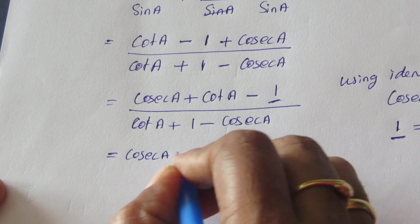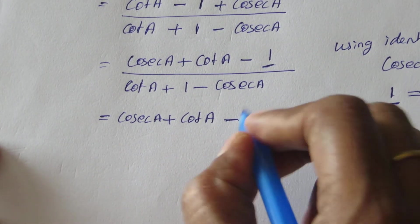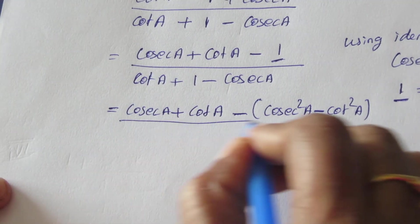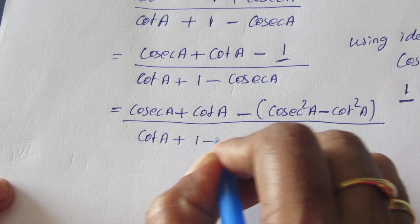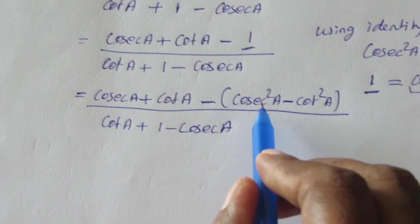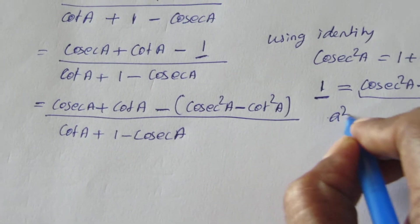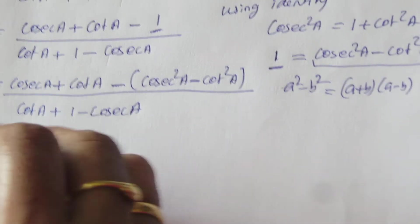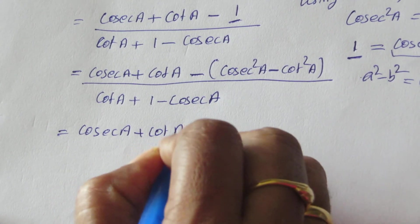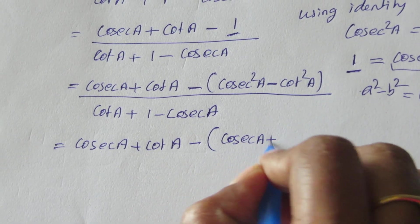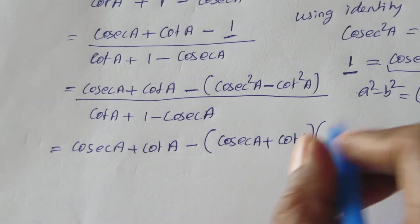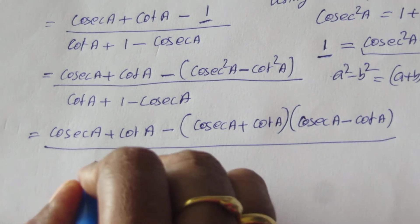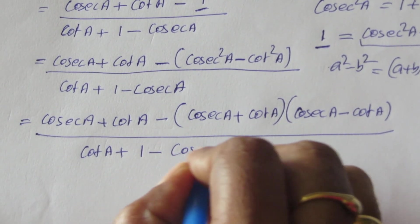So the numerator becomes cot a plus cosec squared a minus cot squared a, divided by cot a plus 1 minus cosec a. Now, cosec squared a minus cot squared a is of the form a squared minus b squared, which equals a plus b into a minus b. We can split this term as cosec a plus cot a into cosec a minus cot a.